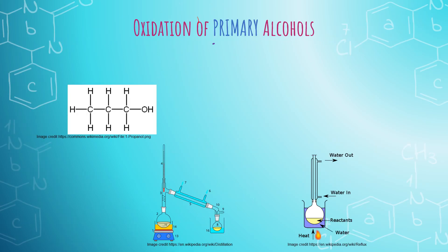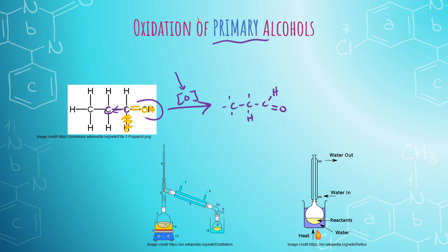Primary alcohols are those where the hydroxyl group is bound to a carbon that is bound to only one other carbon. When we oxidize primary alcohols, we use an oxidizing agent — abbreviated as [O] in square brackets. Good examples are acidified potassium dichromate and acidified potassium permanganate. When we oxidize this primary alcohol, we lose one hydrogen from the carbon and the hydrogen from the hydroxyl group, and then we have a double bond between the carbon and the oxygen. With three carbons and the double-bonded oxygen at the terminal carbon, that molecule is an aldehyde.